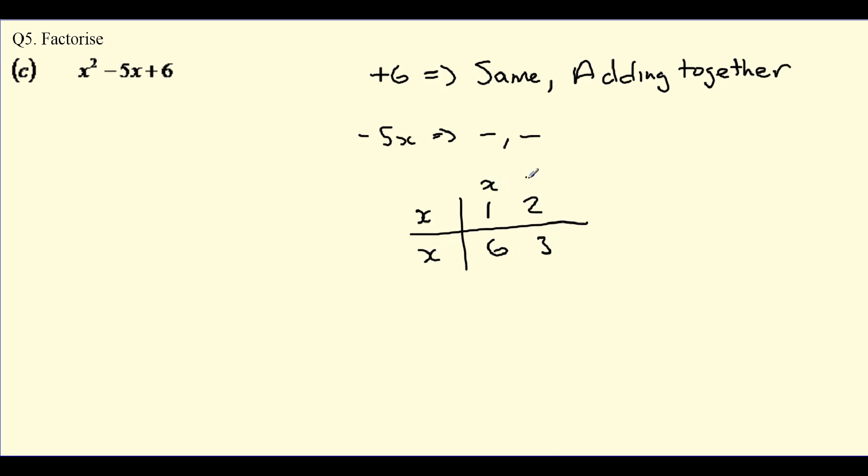So we cross multiply, that would give us x and 2x. That would give us 6x and 3x. And we're looking for the two combinations that add together to give you the number 5. Okay, what about the minus in a second? So 1 and 6 give you 7, 2 and 3 give you 5.